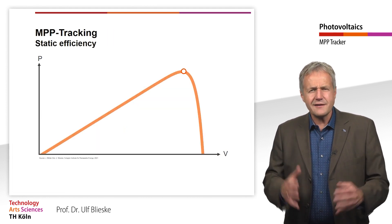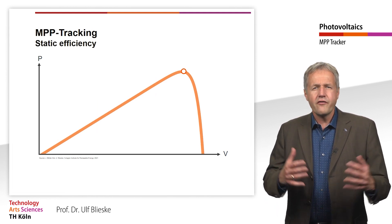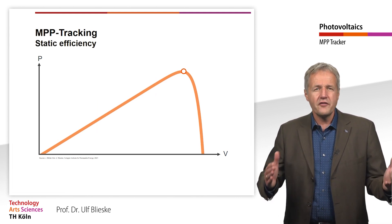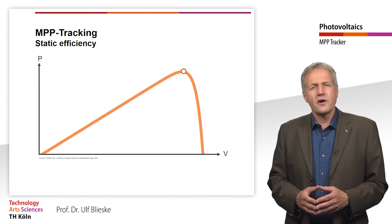But how exactly does such an MPP tracker find the MPP voltage? Of course, if we look at the curve, it is easy to find this point. But how does it work in the field?